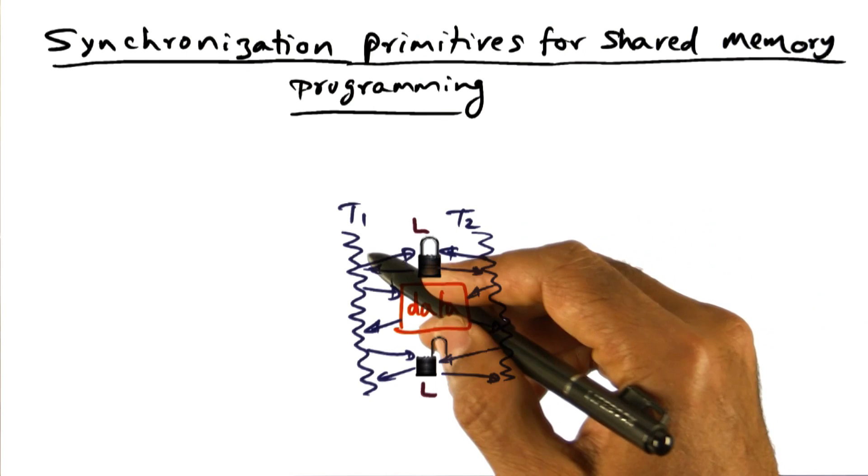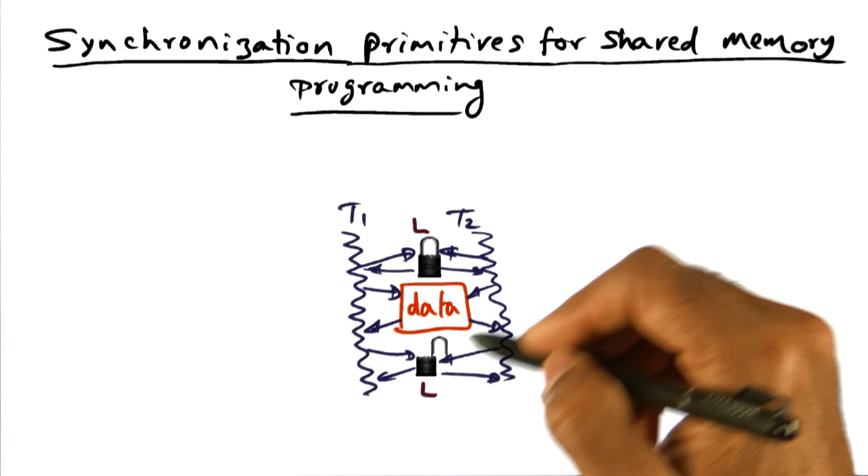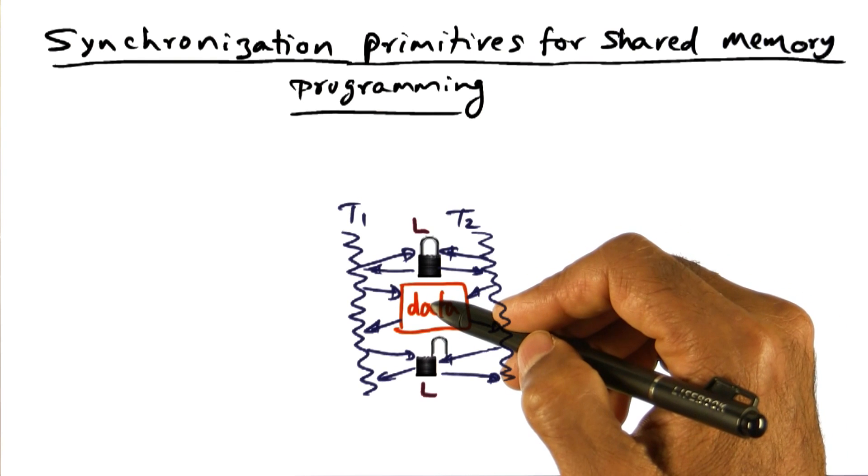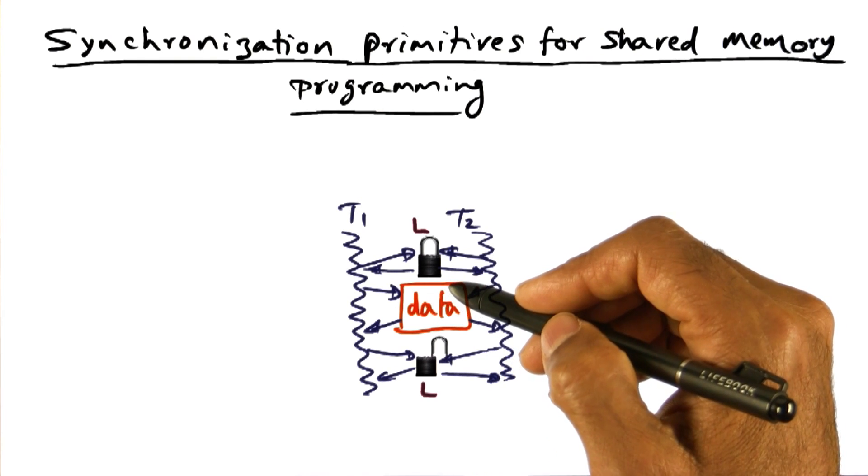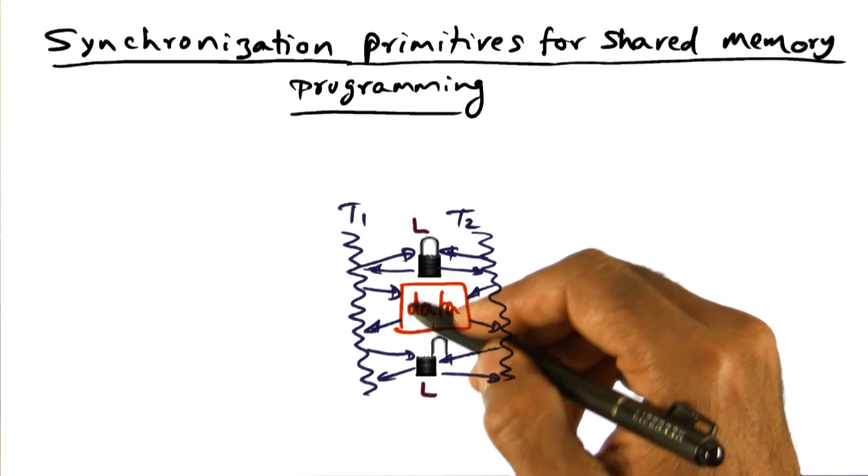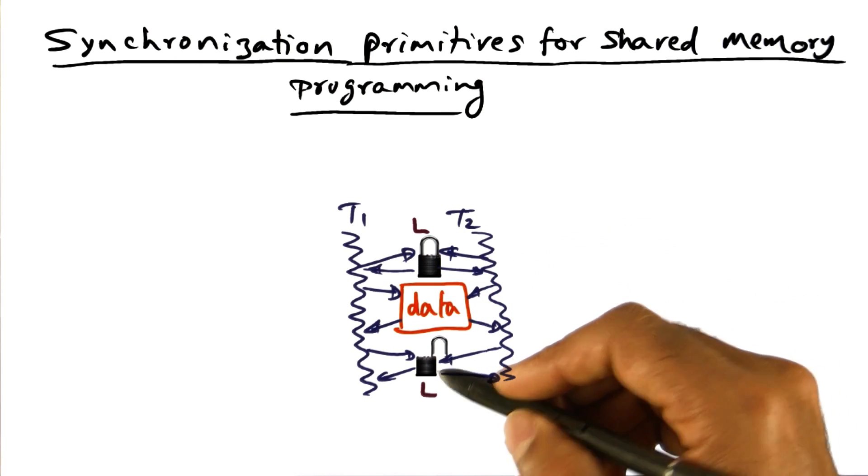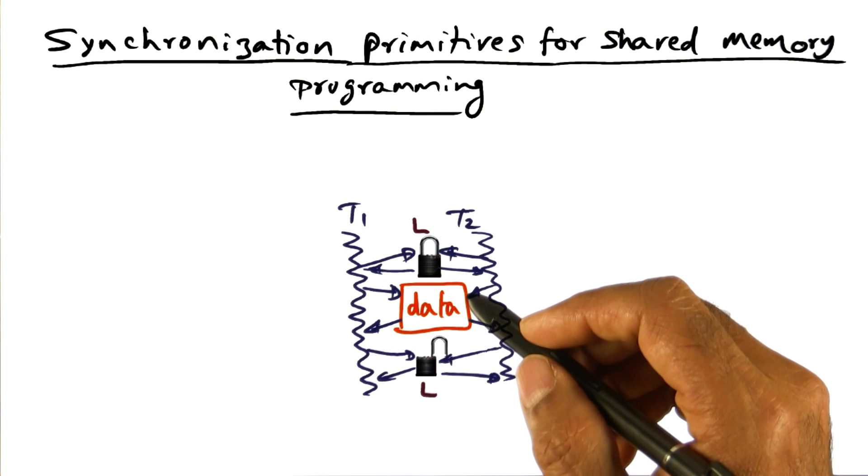But potentially in a multi-threaded program, you can have a lot more threads that are sharing a data structure. And once T1 knows that it has access to this data structure, then it can do whatever it wants with it. And then once it is done with whatever it wants to do with this data, it can release the lock. So that's the idea behind a lock.